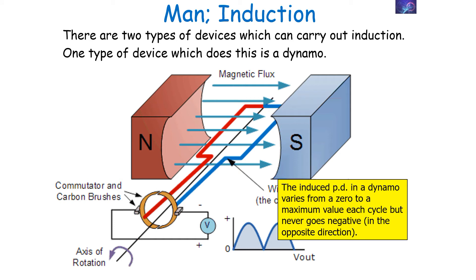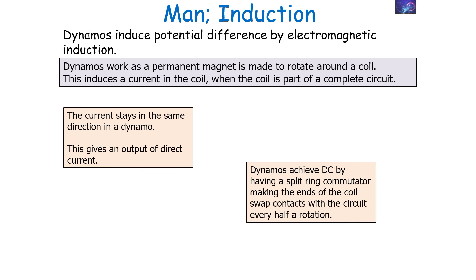The induced potential difference in a dynamo varies from zero to maximum in each cycle, but never goes negative because it never goes in the opposite direction. To clarify: dynamos induce potential difference by electromagnetic induction, working as a permanent magnet is made to rotate around a coil. The current stays in the same direction in a dynamo, giving an output of direct current. Dynamos achieve DC by having a split ring commutator, making the ends of the coil swap contacts with the circuit every half a rotation.